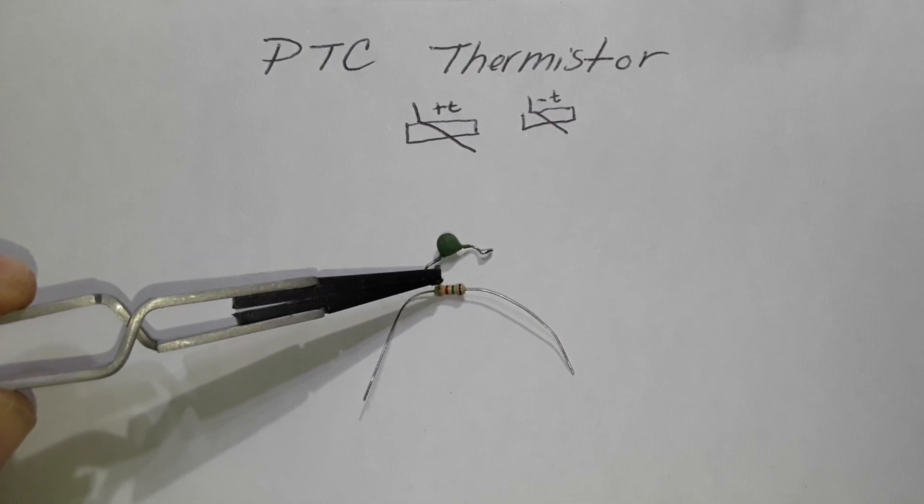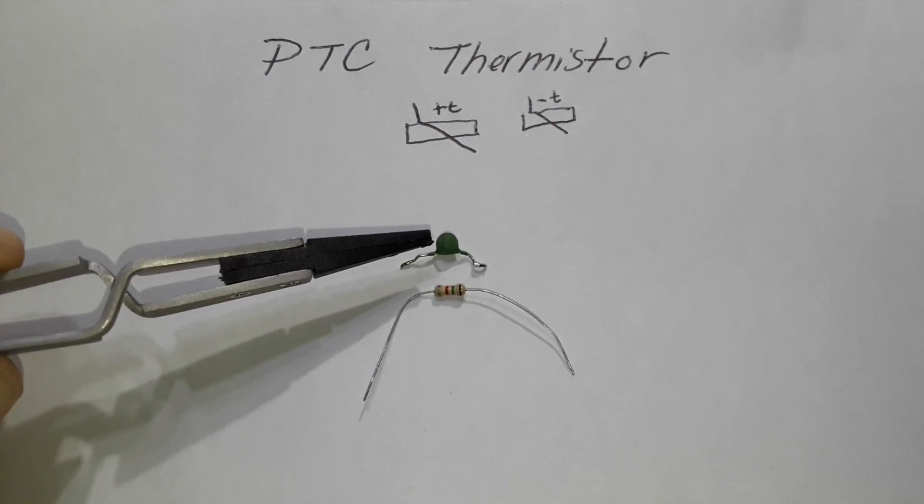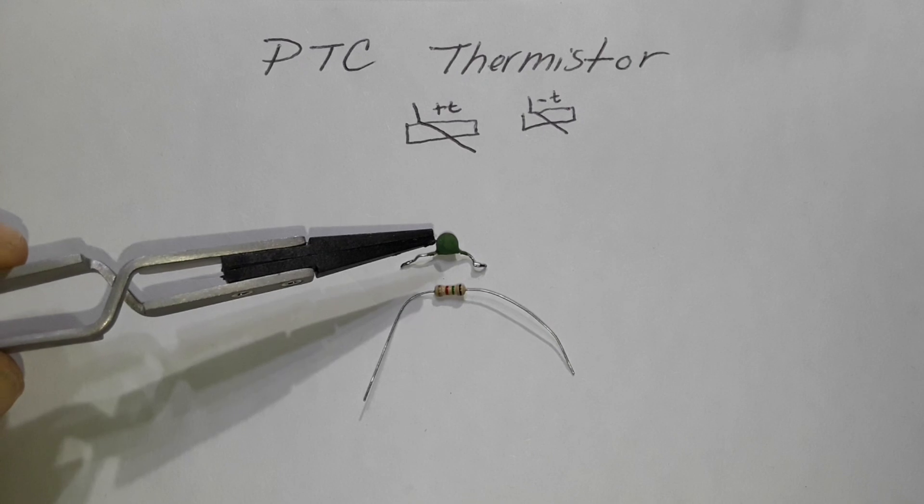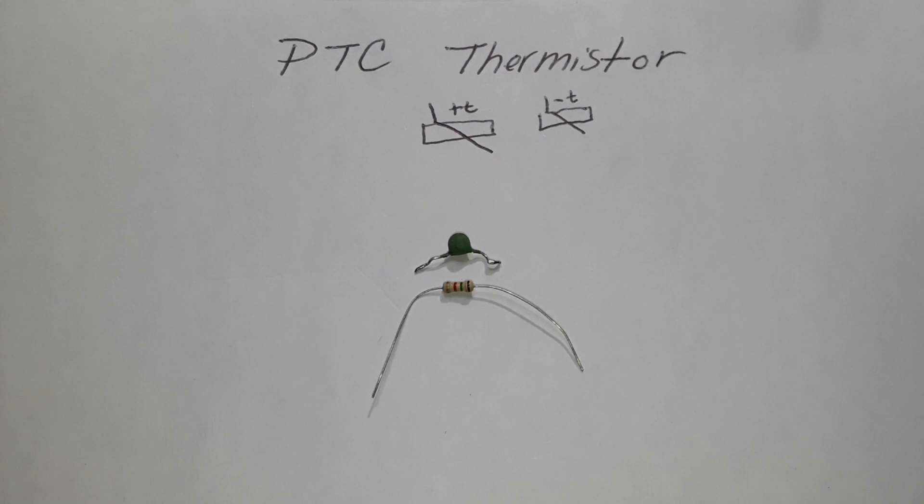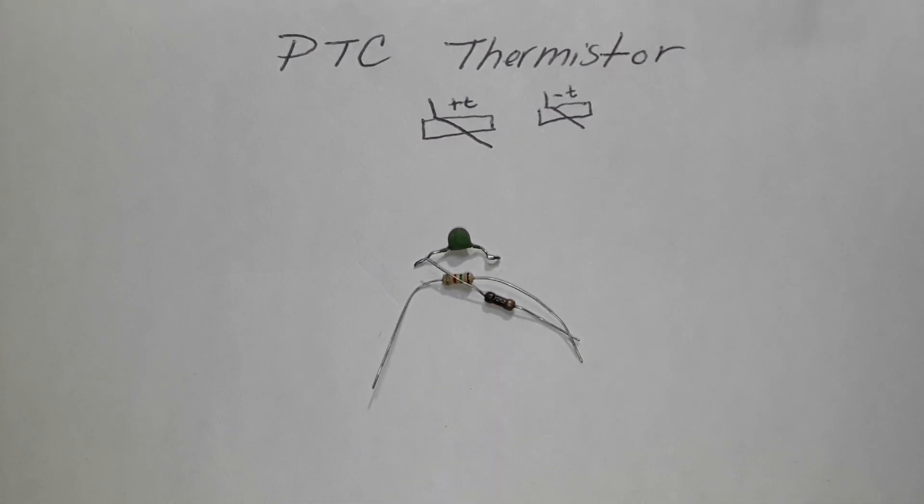And they resist the flow of current. But what is different about these is that when the PTC gets hot, its resistance is going to climb. And when it cools down, it's going to reset itself back to normal. With the resistor, that's probably not going to happen. If it gets too hot, it's just going to burn up.